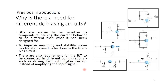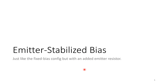Our next DC bias configuration is the emitter stabilized bias. We have covered fixed bias and are now moving on to emitter stabilized — it is just like the fixed bias configuration but with an added emitter resistor.